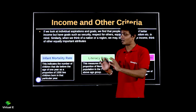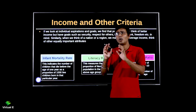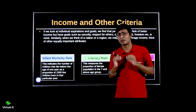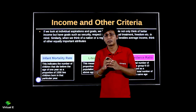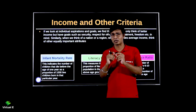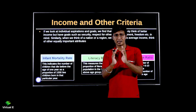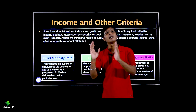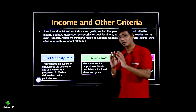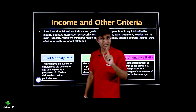The first topic after income is 'Income and Other Criteria.' If you take an average there is a problem — the problem is disparities in distribution. So let's see what other things we can check out. We need to check the health status of a country and education.